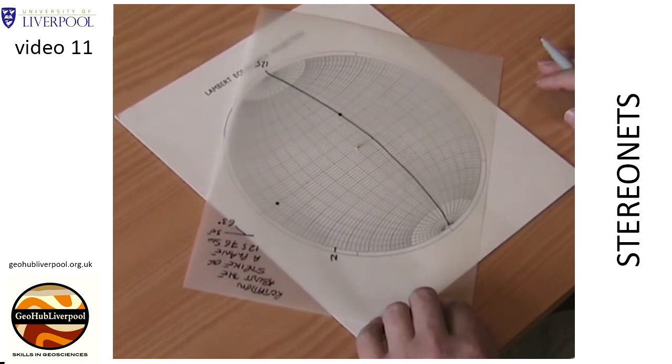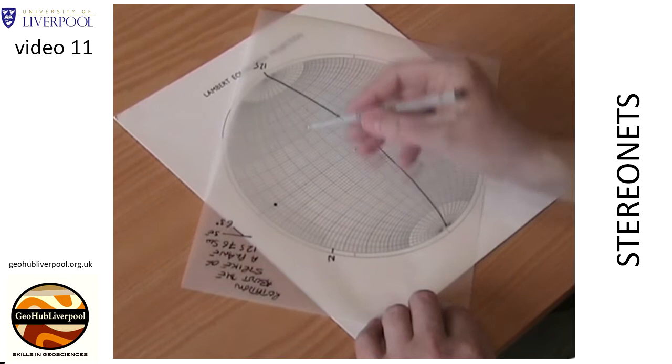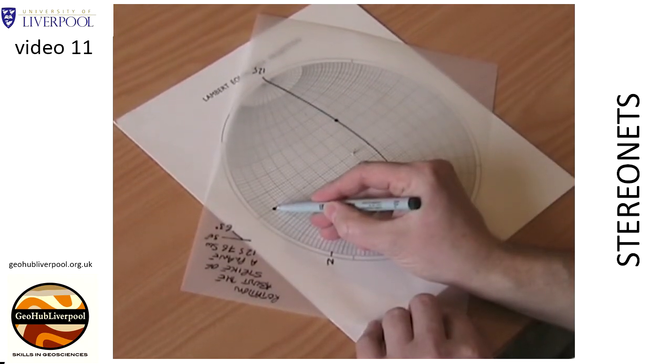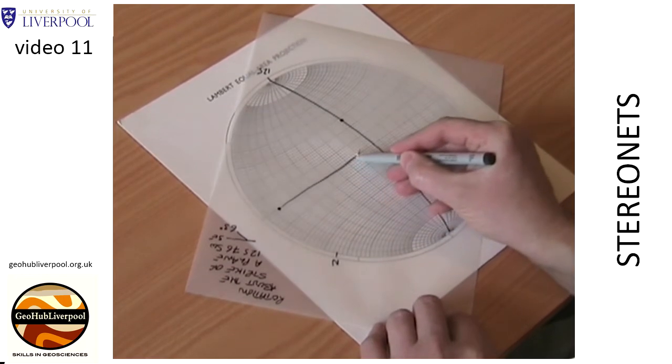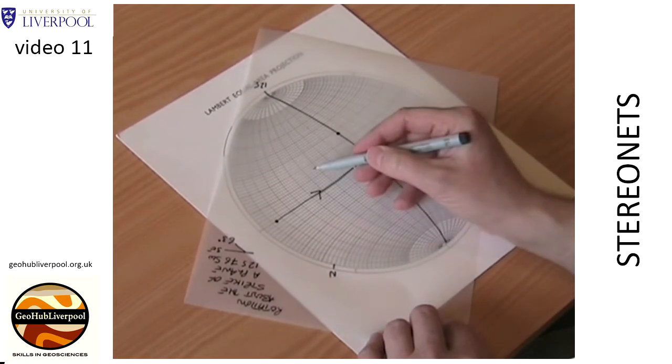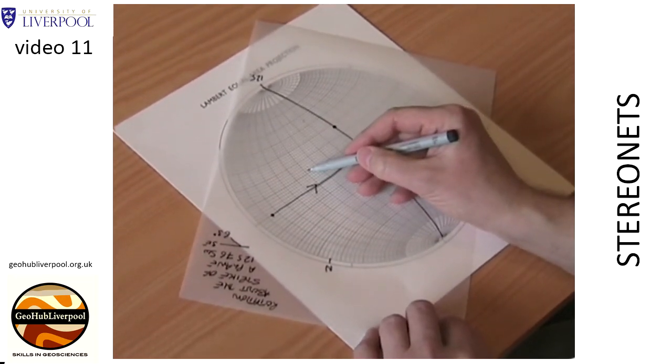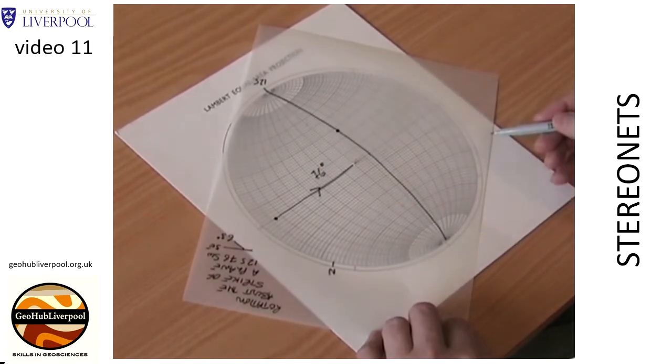To rotate the beds about the horizontal axis, the pole which is perpendicular to the bedding plane would become vertical. The pole is lying on the equator, and if you draw a line from the pole to the center of the stereo net, you can see that to become vertical there would need to be a rotation of 76 degrees.